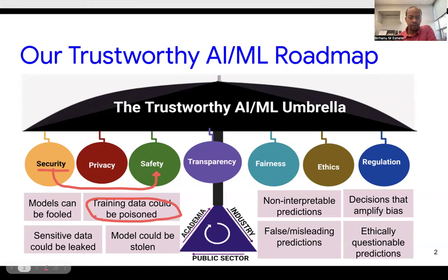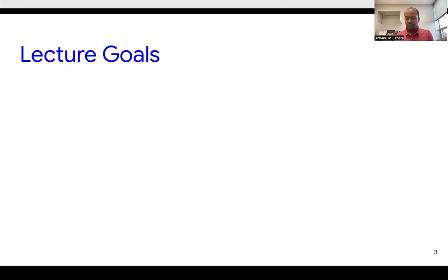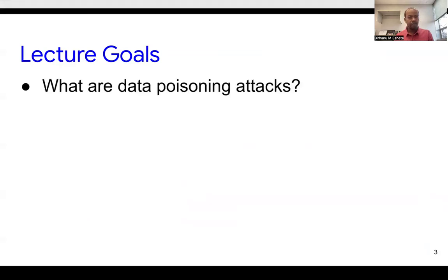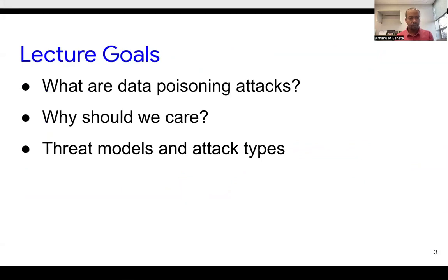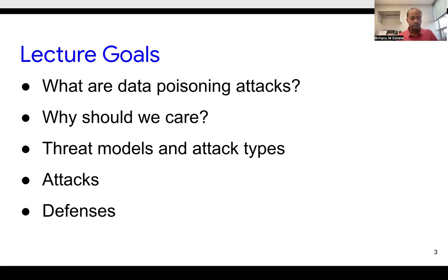Training data poisoning is where the training data of a machine learning model could be adversarially manipulated, leading to consequences such as the model misclassifying data to a different class, serving the adversary's purpose. In this lecture, we'll cover what data poisoning attacks are, why we should care, possible threat models and attack types, representative attacks, and defense ideas for protecting the training process.